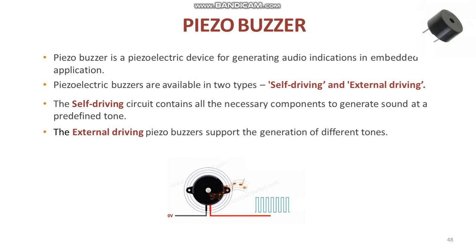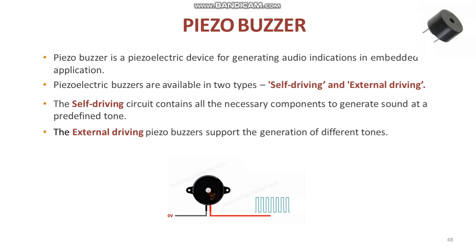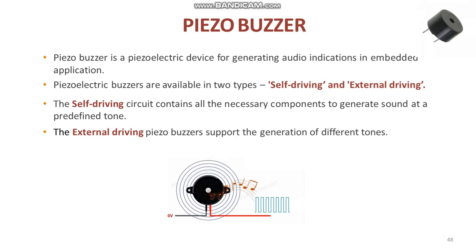A FISO buzzer can be directly interfaced to the port pin of the processor or controller. Depending on the driving current requirements, the FISO buzzer can also be interfaced using a transistor-based driver circuit, similar to the case of a relay.